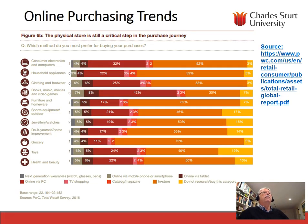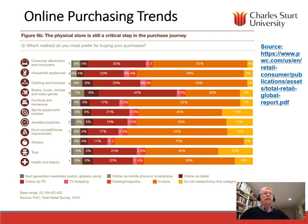Looking at some of the differences in online purchasing trends and the importance of the physical store, you can see that in almost all cases — whether it's consumer electronics, household appliances, or clothing and footwear — if you ask consumers which method they prefer for buying, the majority generally prefer to shop in the physical store. This is becoming less dominant, but it's still an important category, and this data relates to 2016.